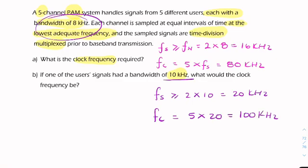It won't be 4 times 16 and then 1 times 20. We don't do that. What we do is we assume that all the signals are sampled at the same frequency, and therefore our clock frequency would increase from 80 kHz to 100 kHz.